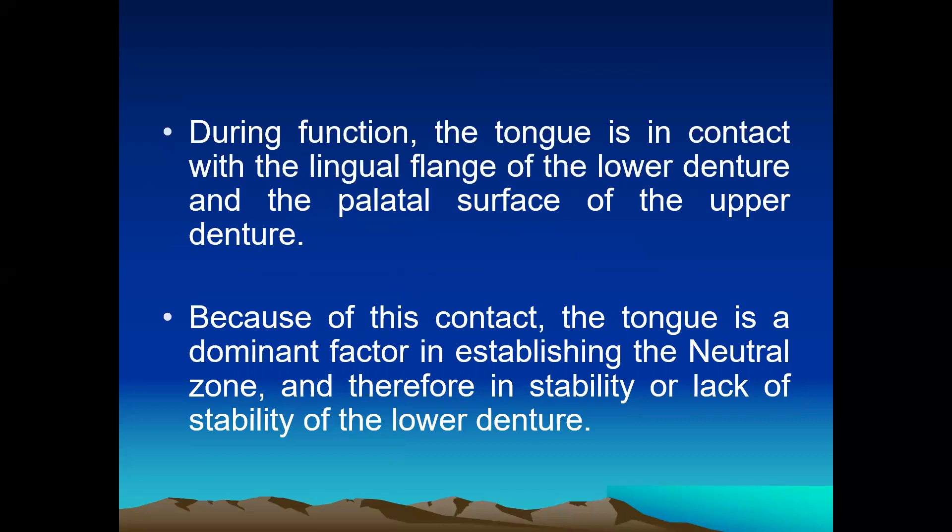Because of this contact, the tongue is a dominant factor in establishing the Neutral Zone. Therefore, instability or lack of stability of the lower denture — the position of the tongue — is a very important factor in establishing the stability of the lower denture.